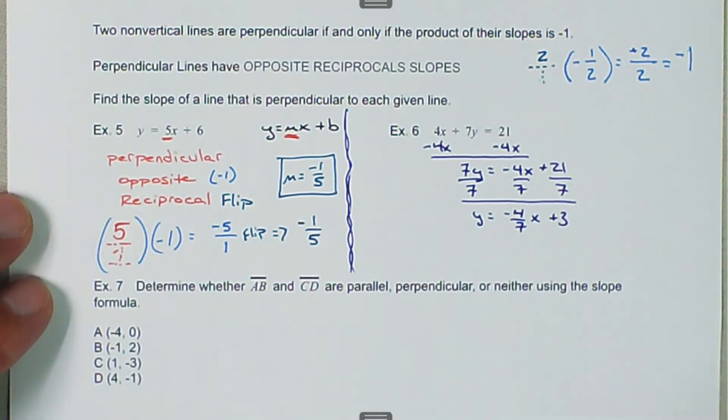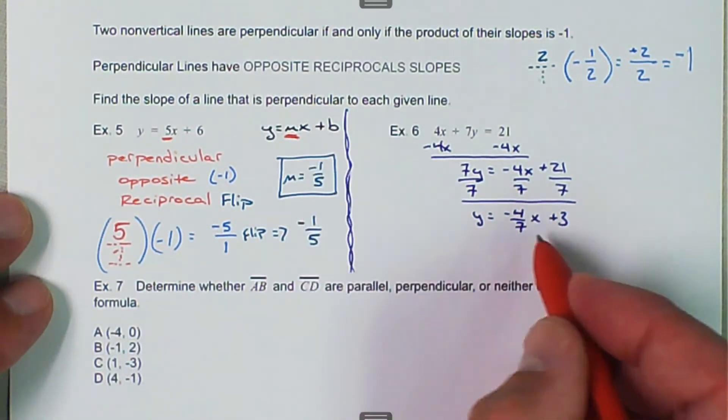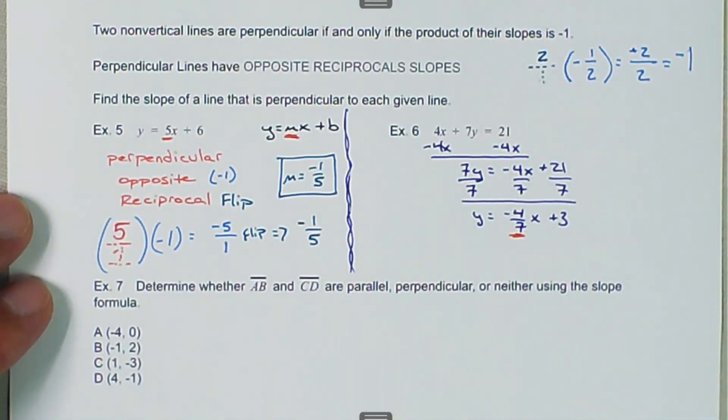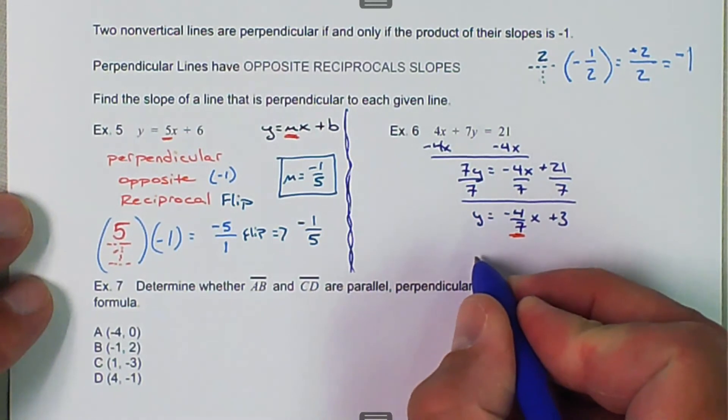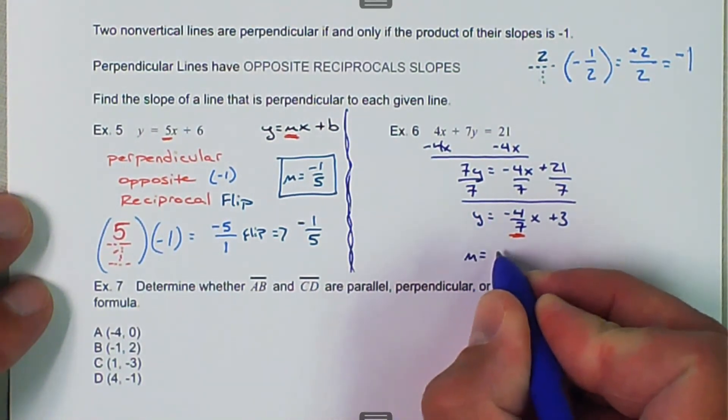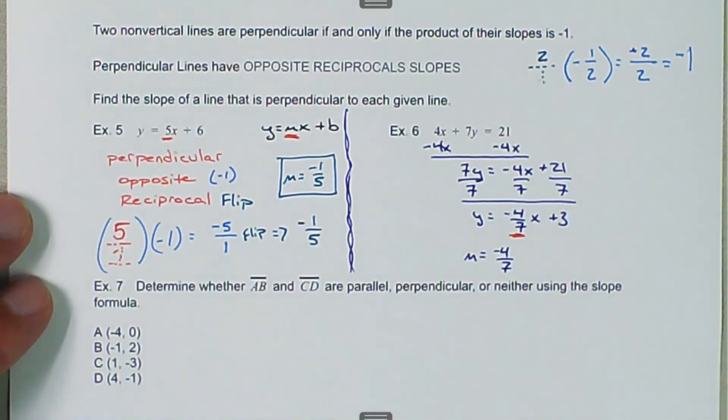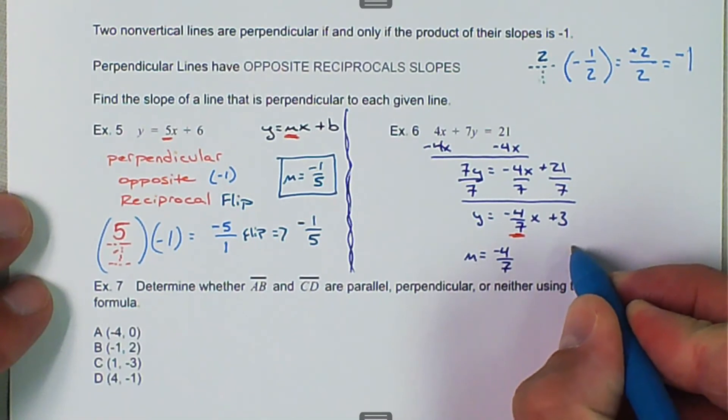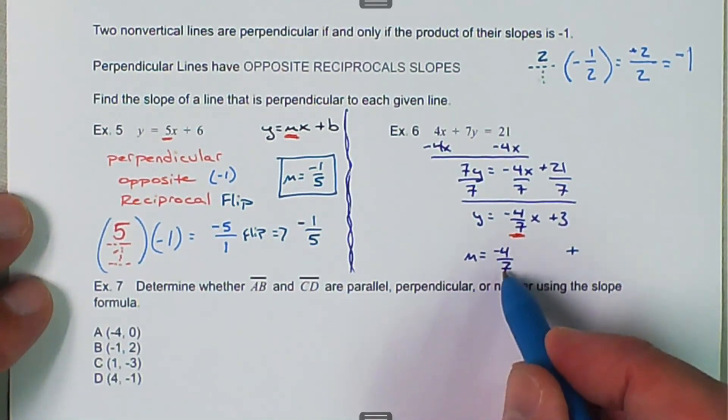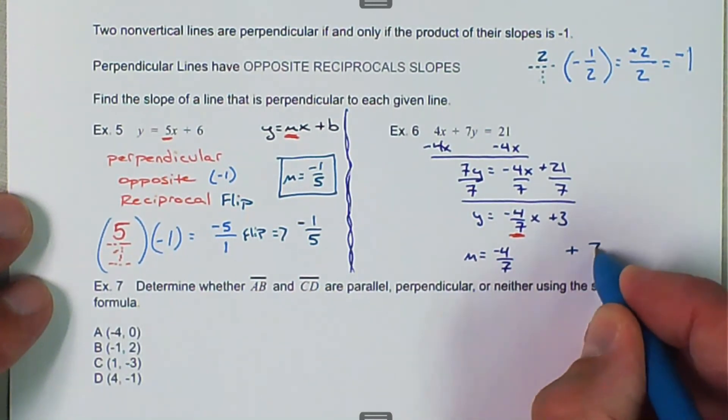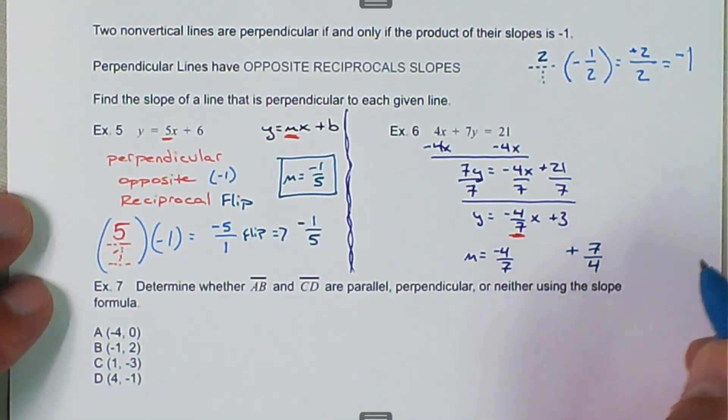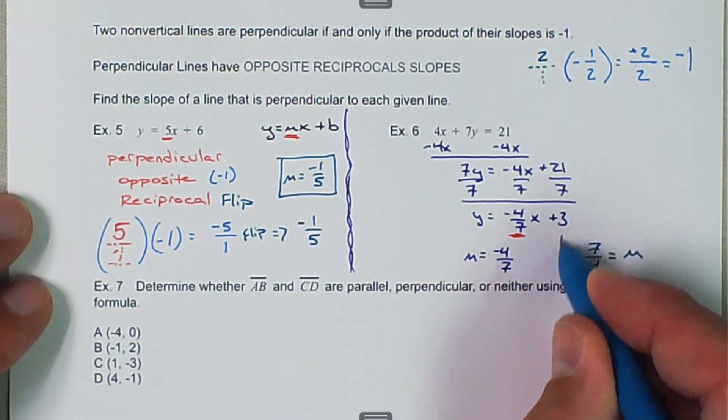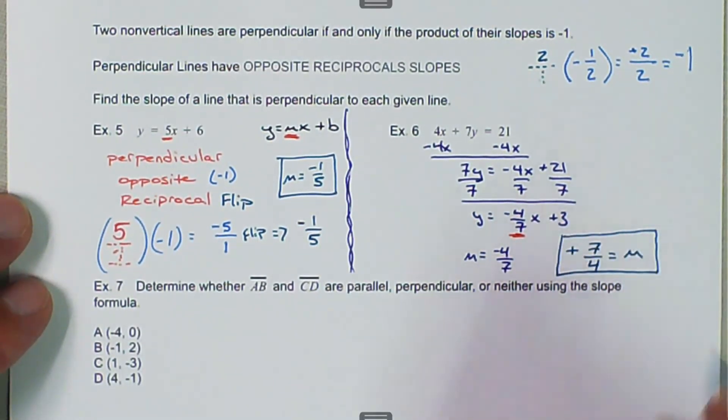So here we're looking for our slope, which is the coefficient in front of the x variable. So our current slope is m equals negative 4 over 7. But our perpendicular slope, we want to do the opposite and reciprocal. So opposite, this is negative, so opposite means let's make it positive. And reciprocal means we want to flip it. So 7 was in the denominator, now it's in the numerator. And so that is the slope that is perpendicular to the given equation, or given linear equation.